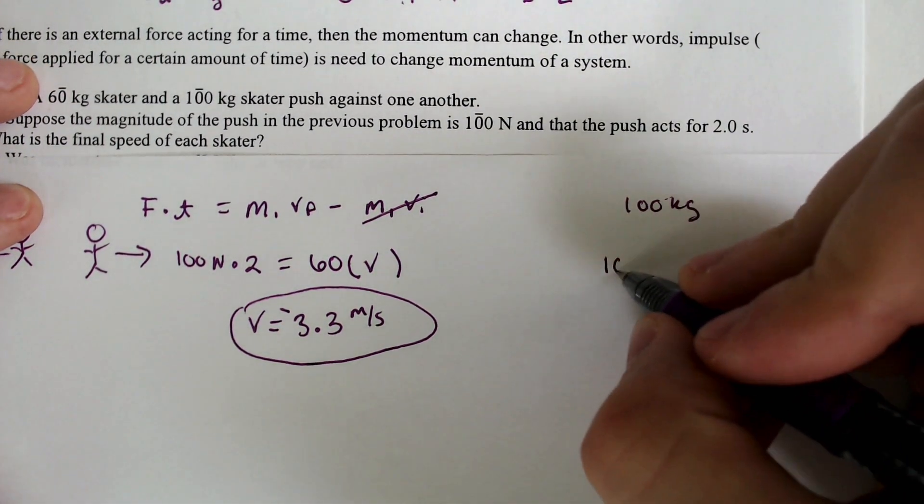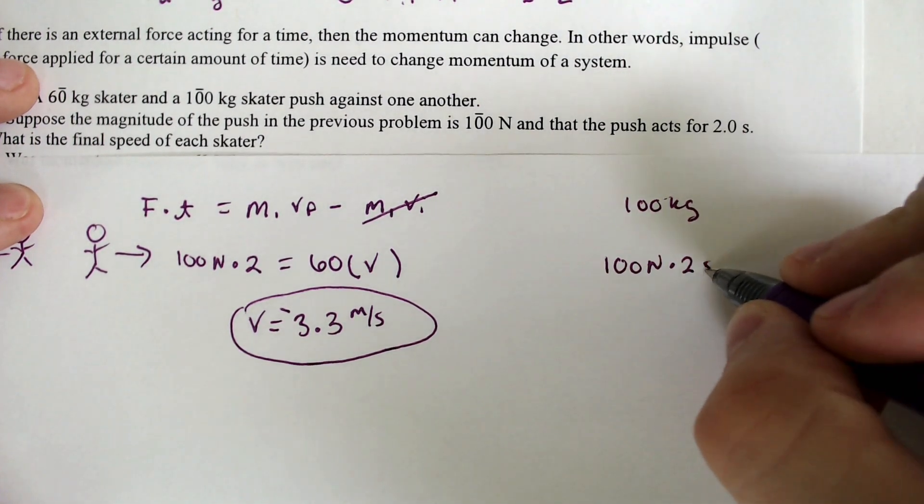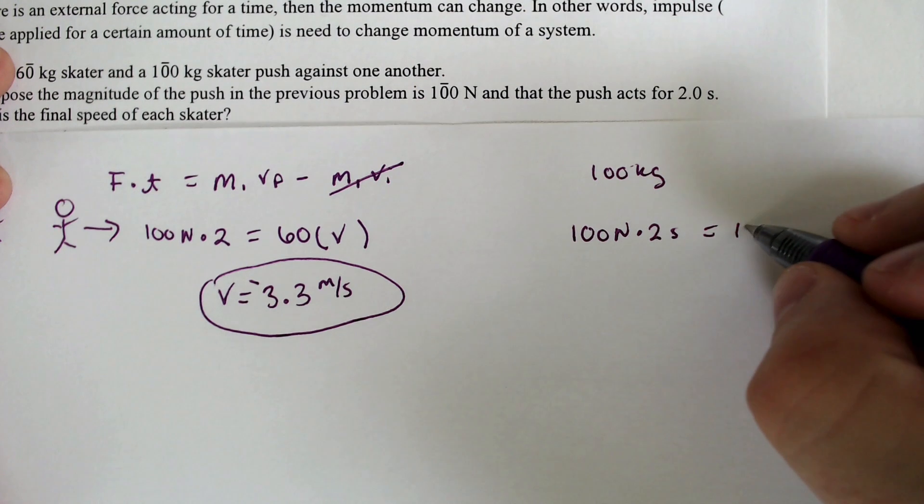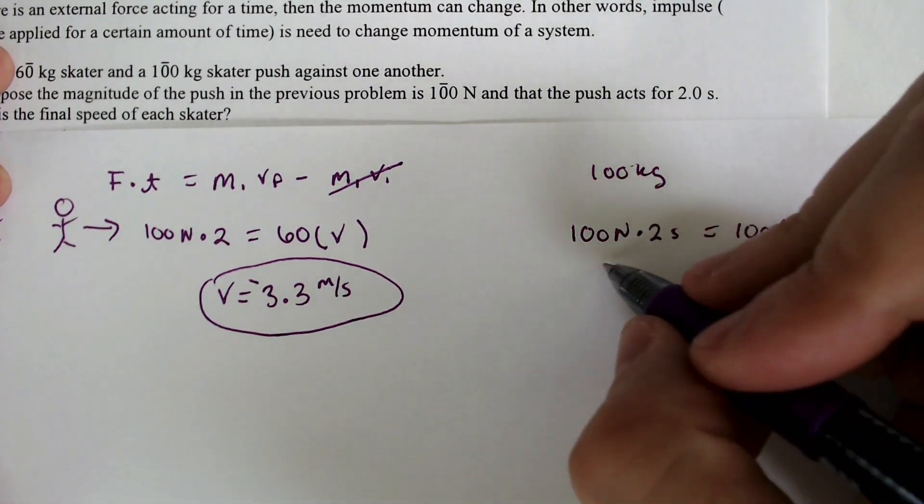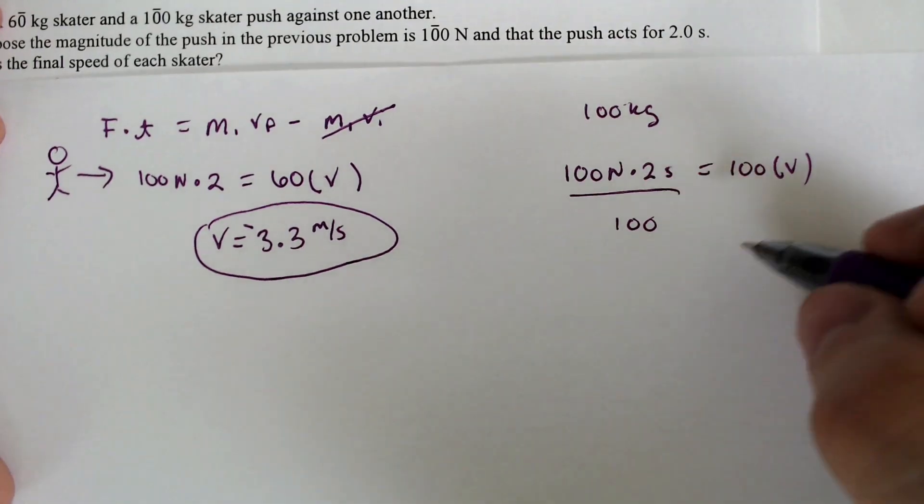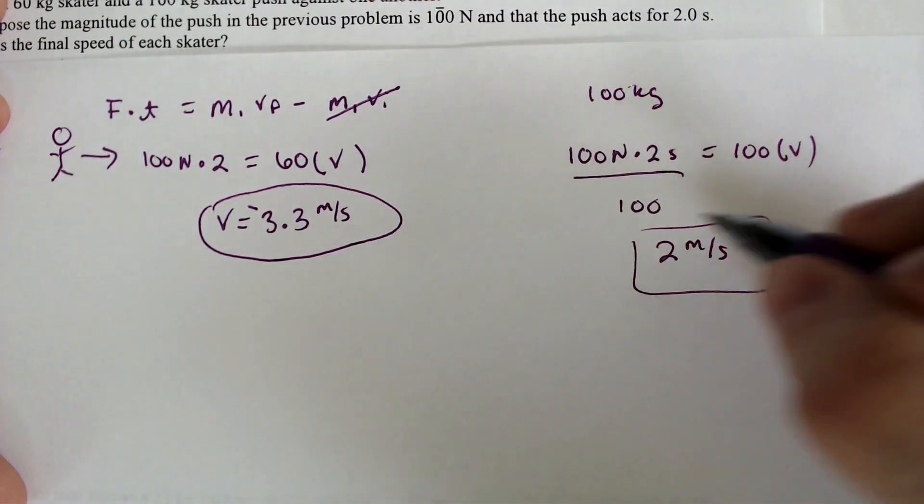but it's just in the opposite direction, so they would still have 100 newtons times the two seconds, and they would just have a different mass, 100 times their velocity. And if we divide that, we find out that they are going 2 meters per second for the 100-kilogram skater.